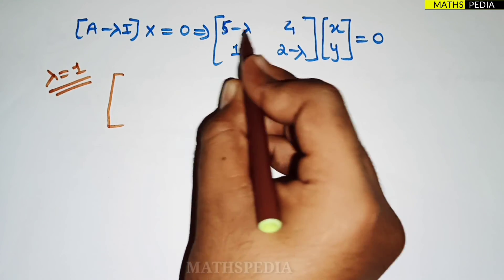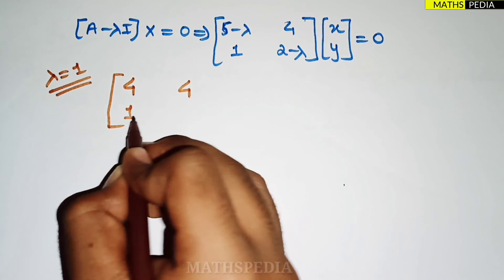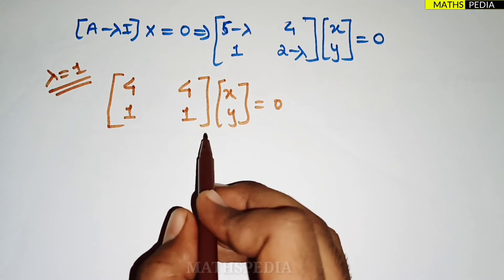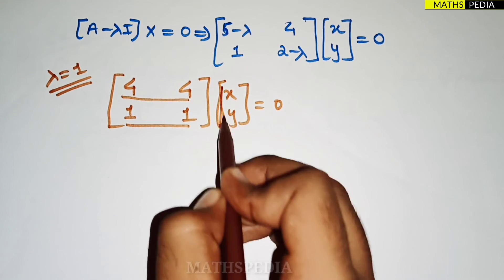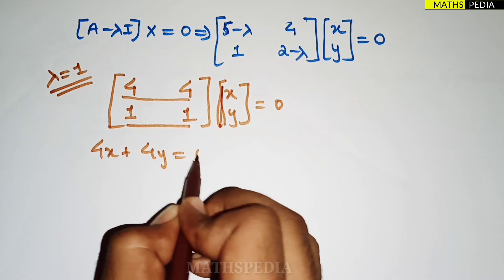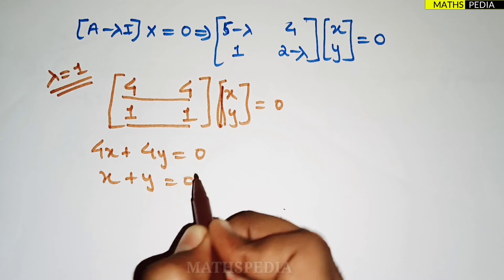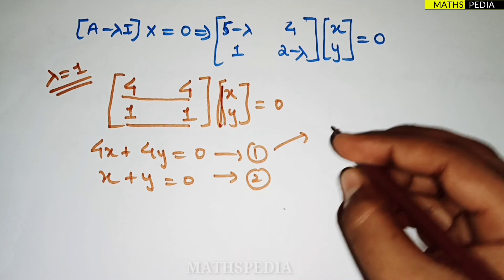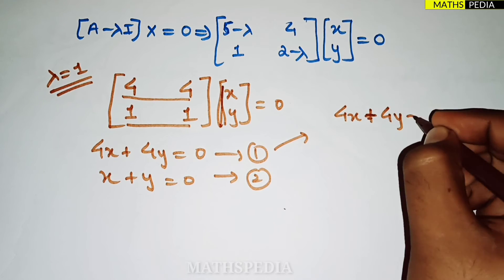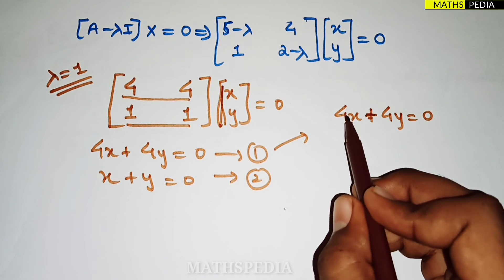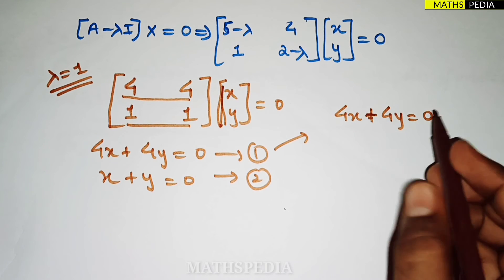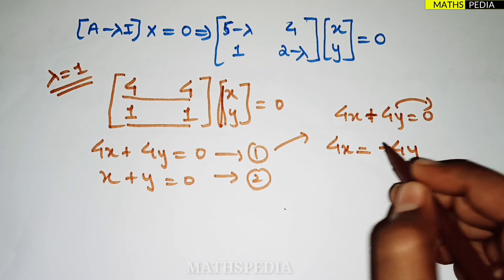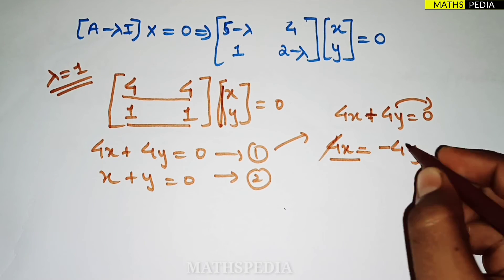For λ = 1: the matrix becomes [5−1, 4; 1, 2−1] = [4, 4; 1, 1]. Multiplying gives two equations: 4x + 4y = 0 and x + y = 0. Taking the first equation: 4x = −4y, so x = −y.